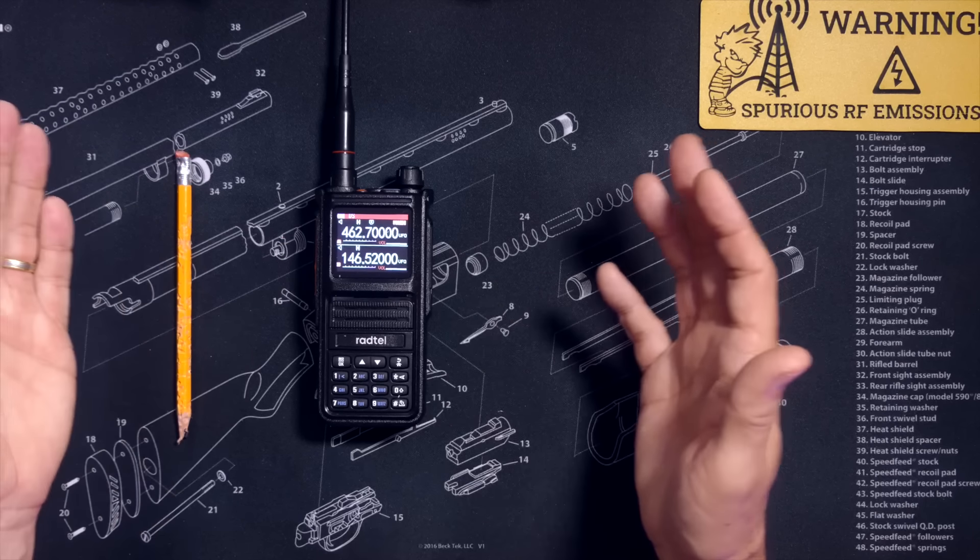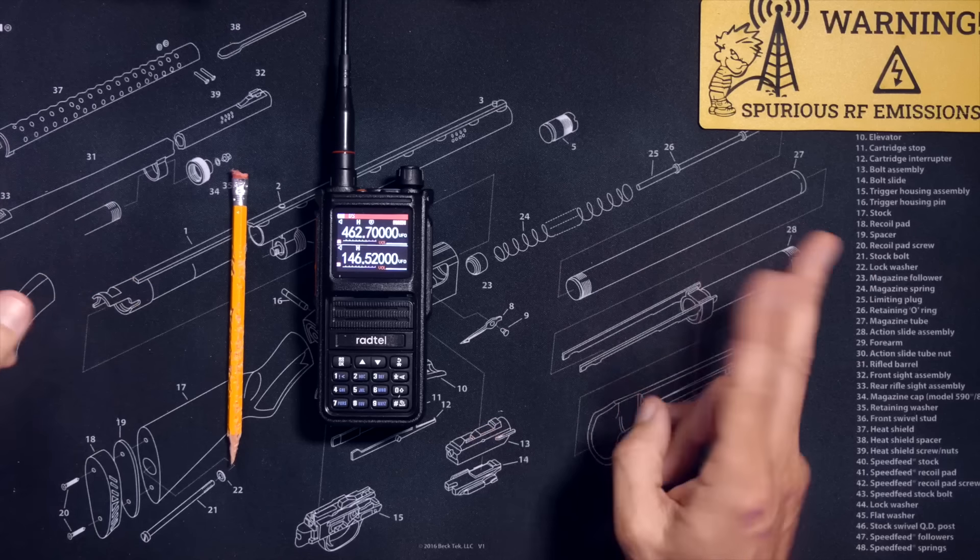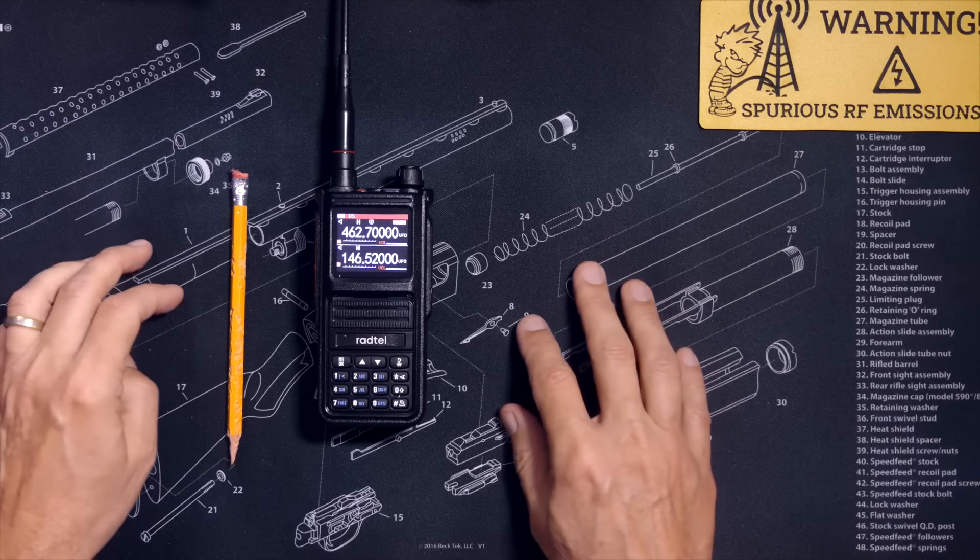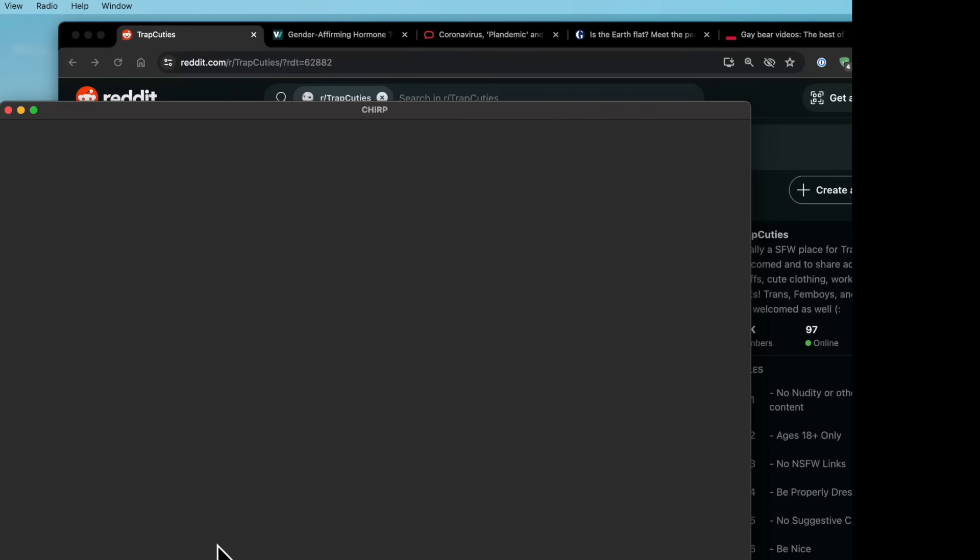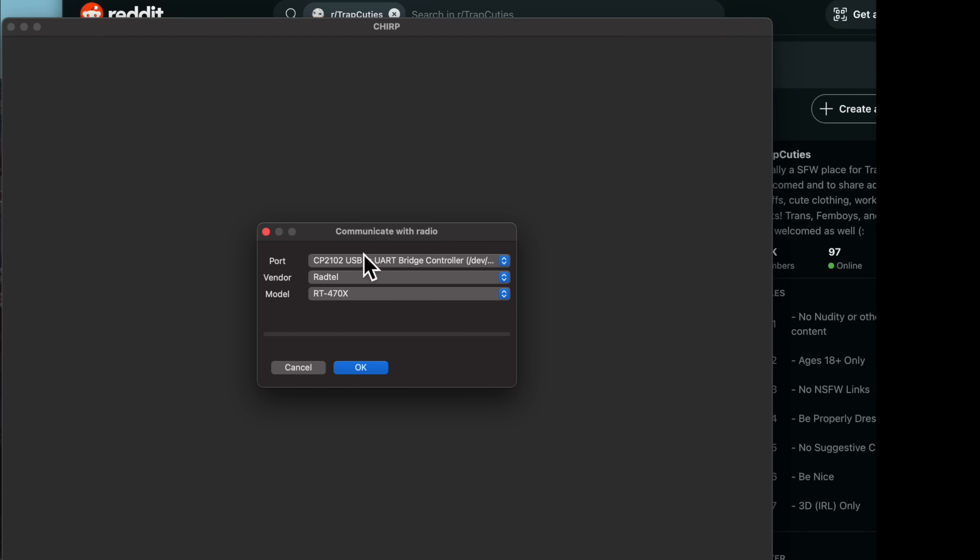The radio is fully chirp-compatible, contrary to what some people have complained about in the onlines. This makes it very easy to program multiple channels or multiple repeaters on the radio. However, to do that, you will also need a programming cable. I will leave an affiliate link to the programming cable that I use below.